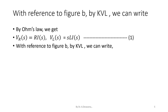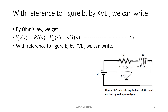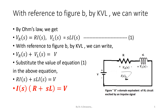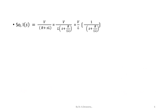With reference to figure B by KVL we can write: capital V suffix L of s equals capital V. Taking I of s as common gives I of s into open bracket R plus S L close bracket equals capital V. So I of s is equal to capital V divided by R plus S into L.